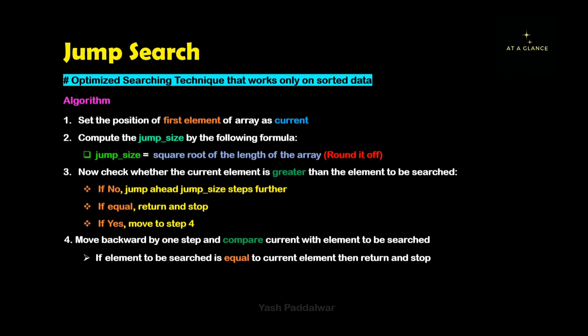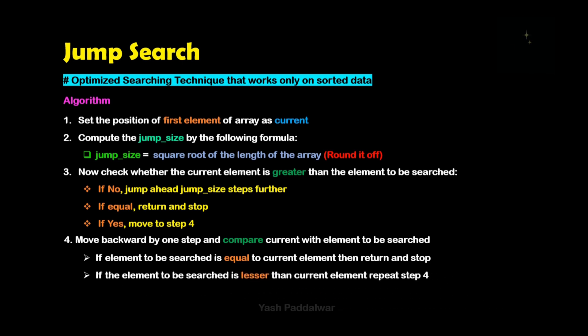Now in step 4, in the case when the current element is greater than the element to be searched, the element to be searched is going to lie on the left hand side of the element at the current position. So you need to move backward one by one and check whether the current element is equal to the element to be searched, and finally you will find the element.